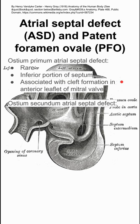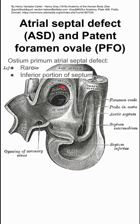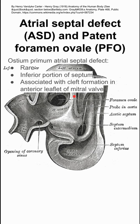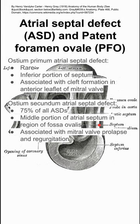The next type of ASD is much more common: the ostium secundum atrial septal defect. This is the septum secundum in the background for reference. This one accounts for 75% of all ASDs. It's located in the middle portion of the atrial septum in the region of the fossa ovalis, and it's associated with mitral valve prolapse and regurgitation.